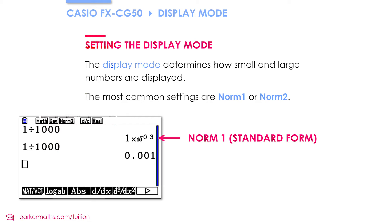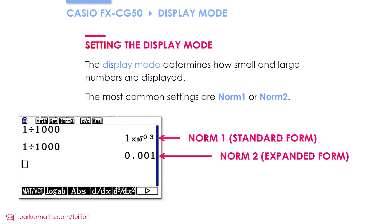However, if you do 1 divided by 1000 and get the answer 0.001, that's how your calculator displays values when it's in norm 2 mode. The default setting once you've reset your calculator is norm 1.